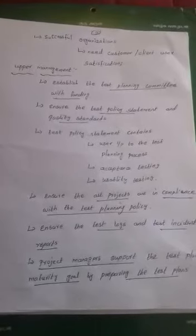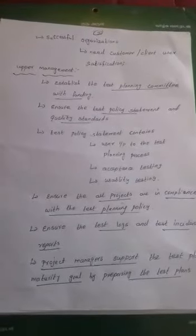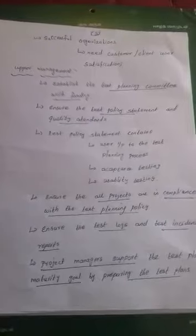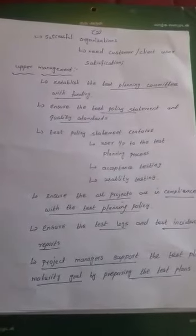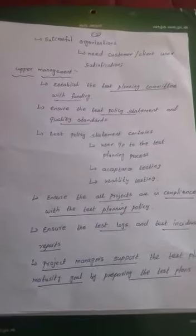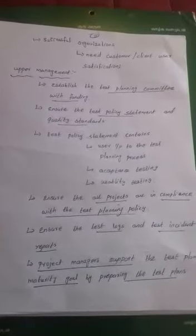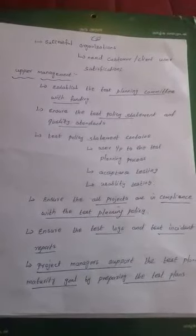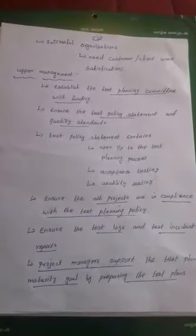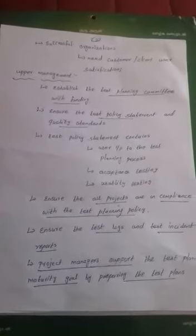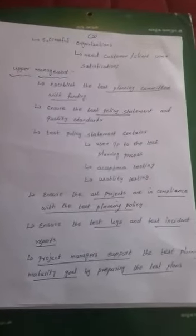The next one is upper management. Upper management roles include establishing the test planning committee with funding, ensuring the test policy statements and quality standards. Test policy statements contain the user input to the test planning process. After that, acceptance testing and usability testing. Next, to ensure all projects are in compliance with the test planning policies.